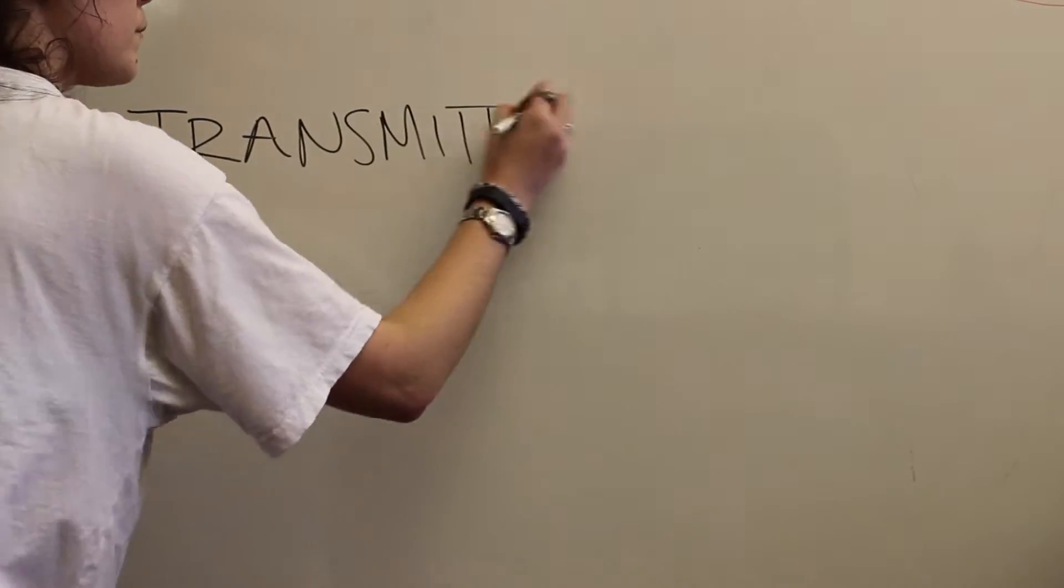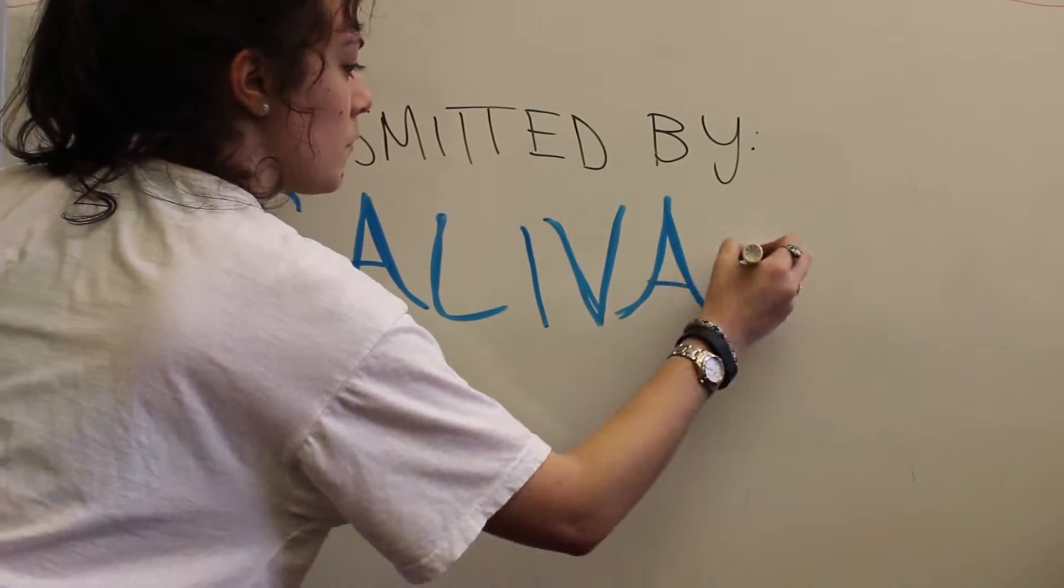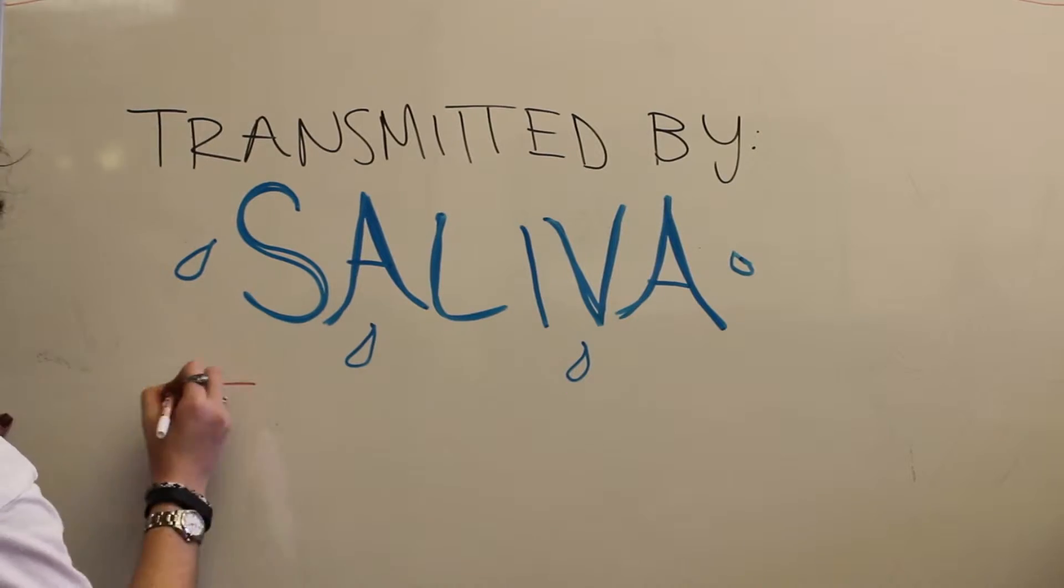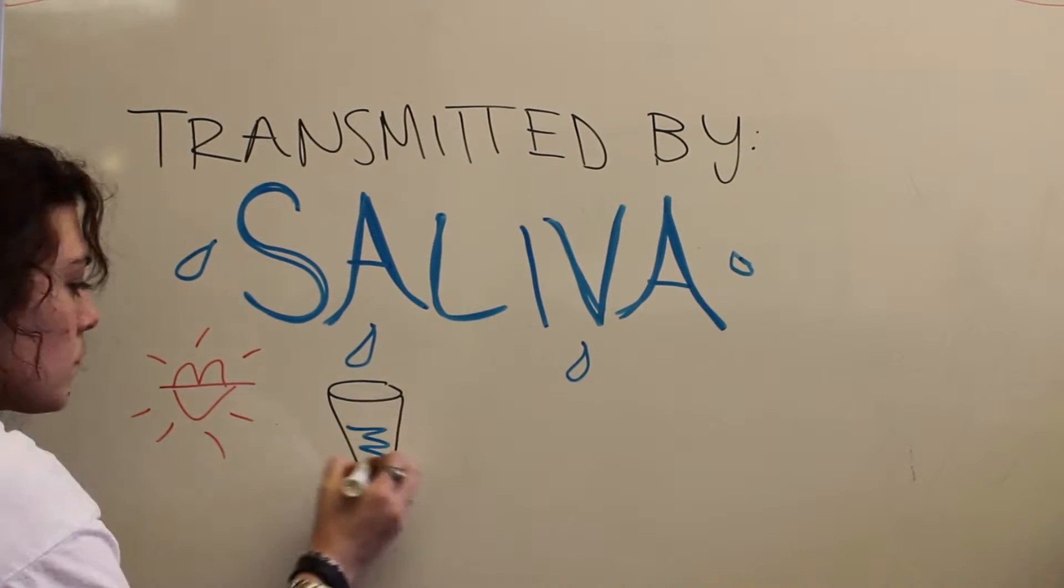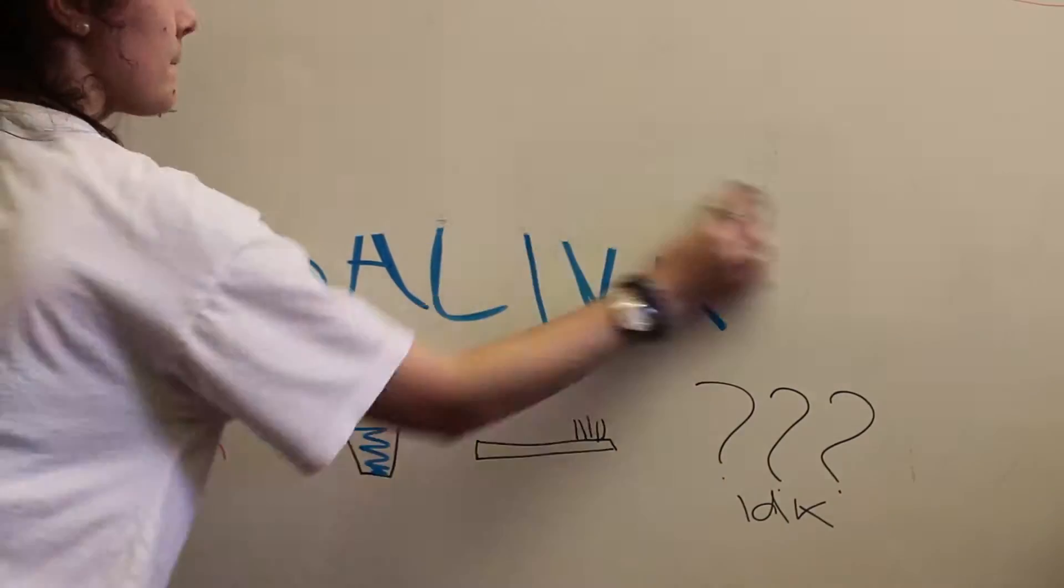The virus is typically transmitted by saliva, which is why it's often called the kissing disease, but it can also be spread by sharing cups, toothbrushes, or anything else someone stupid decided to put their mouth on.